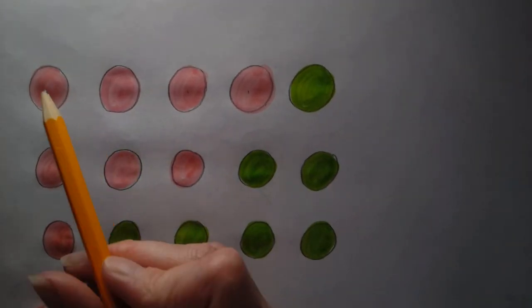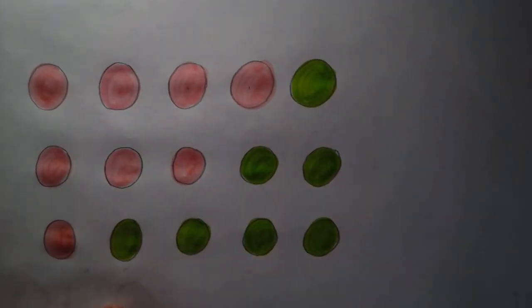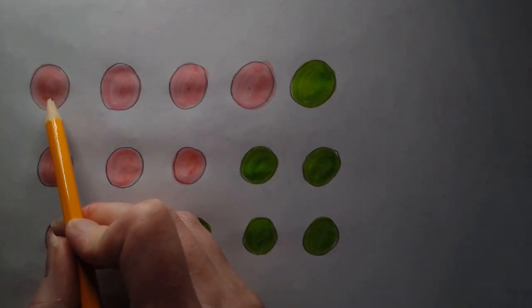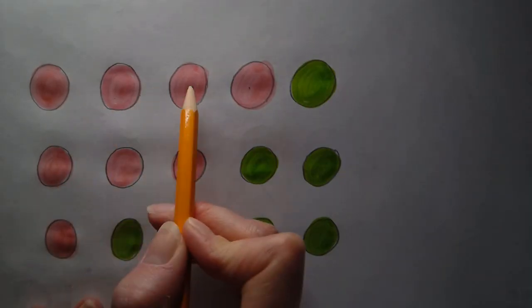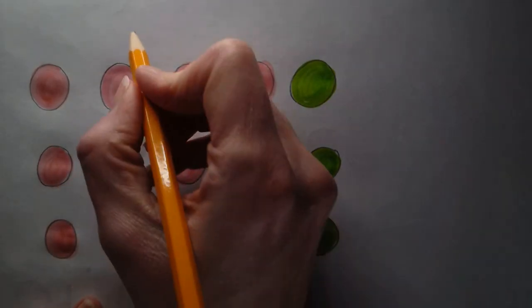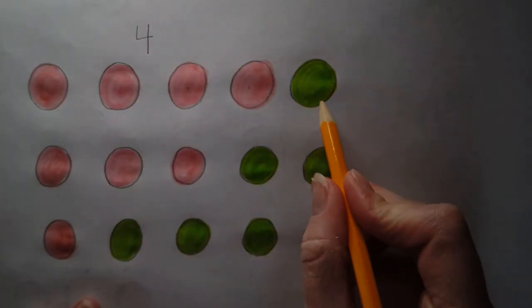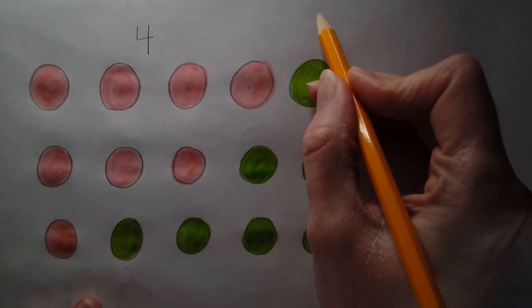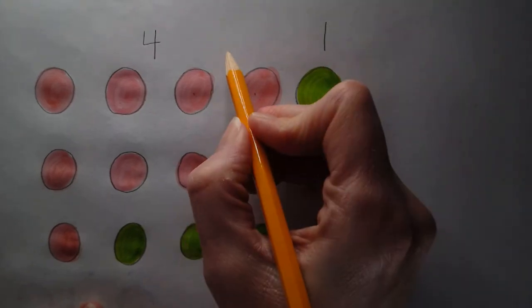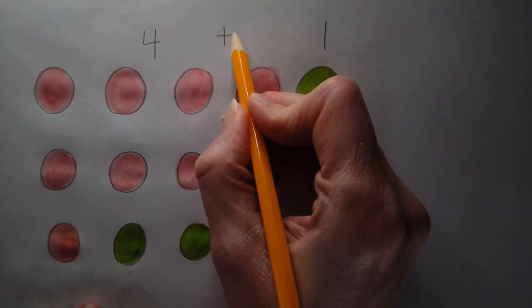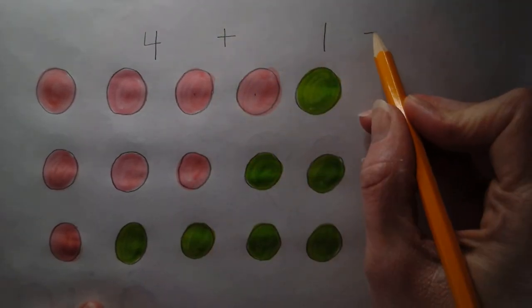So when I look at this, these are different ways to make five. And let's see how we did that. We have one, two, three, four pinks on this one. So I'm going to put the number four. And how many greens do I have? Good job. I've got one green.